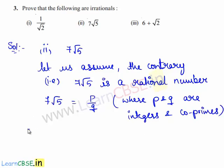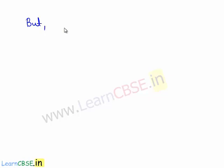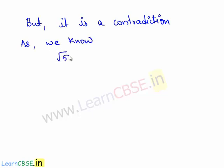This can be written as root 5 is equal to p upon 7q. Since p and q are integers and 7 is also an integer, p upon 7q gives a rational number. This implies that root 5 is also a rational number. But the obtained statement is a contradiction, as we already know root 5 is an irrational number.